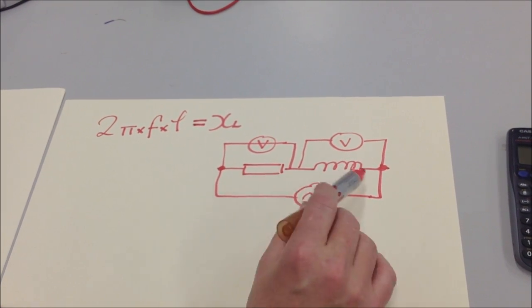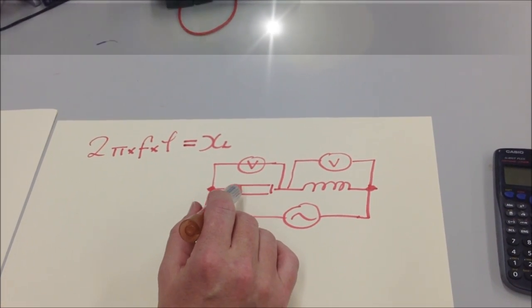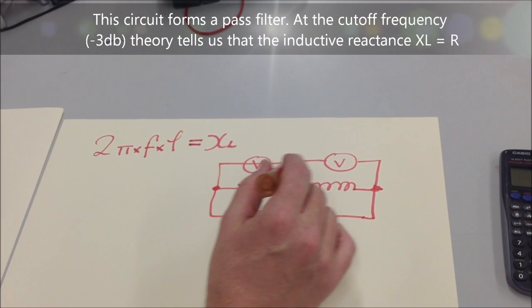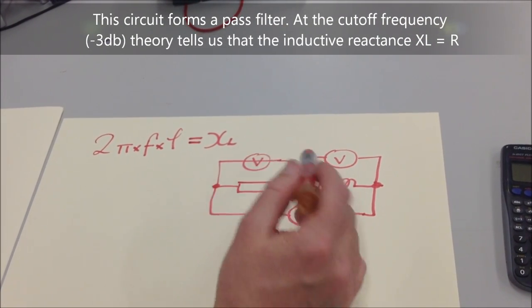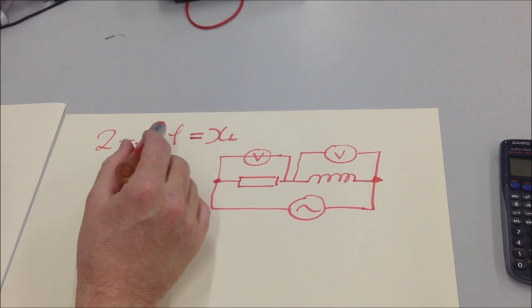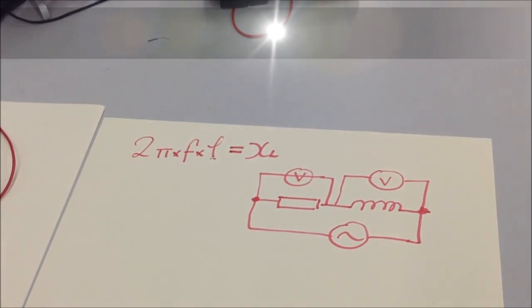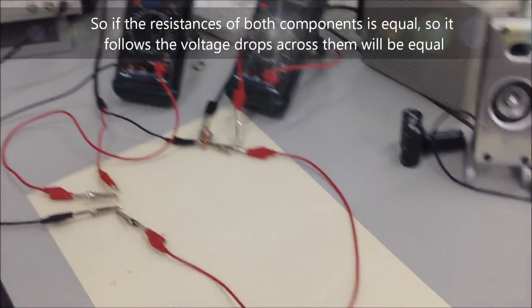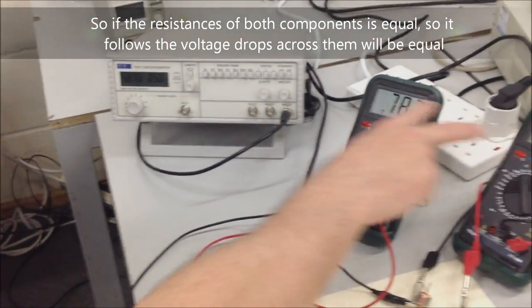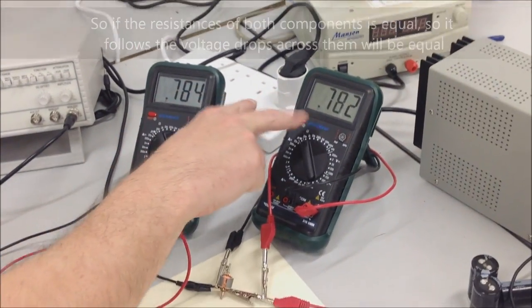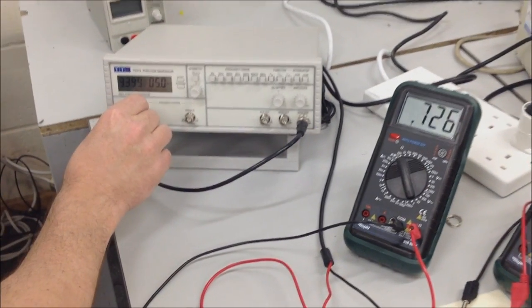We're going on the theory that at the cutoff frequency both of these components will form a filter, and at the cutoff frequency the resistance across both of them will be the same, so therefore the voltage will be the same. As we adjust the frequency, at the moment I've got it set up so the volt drop across both components is exactly the same.